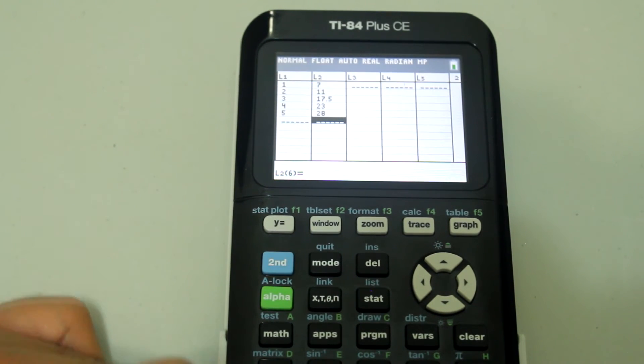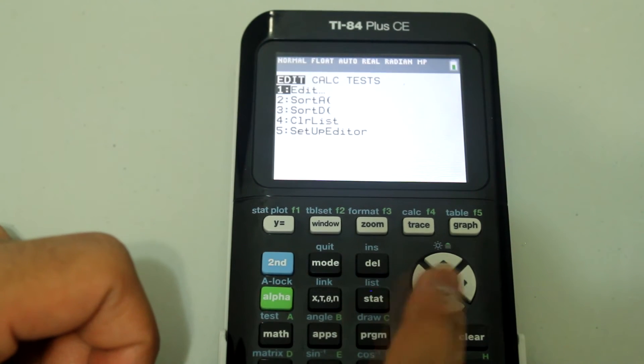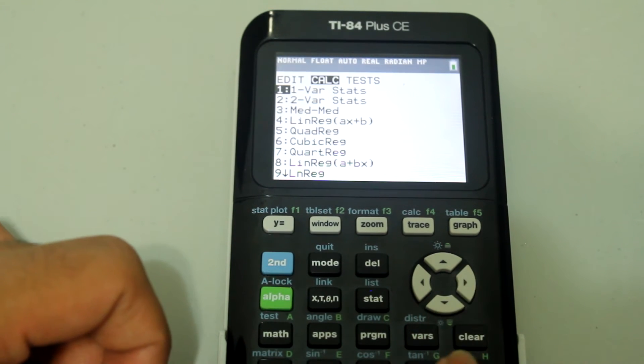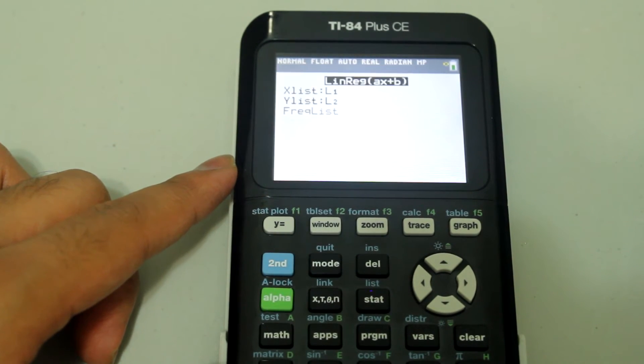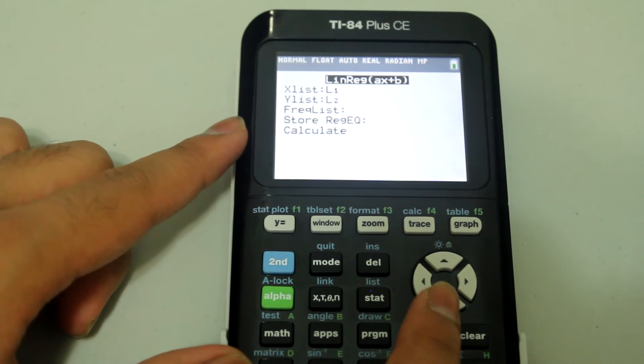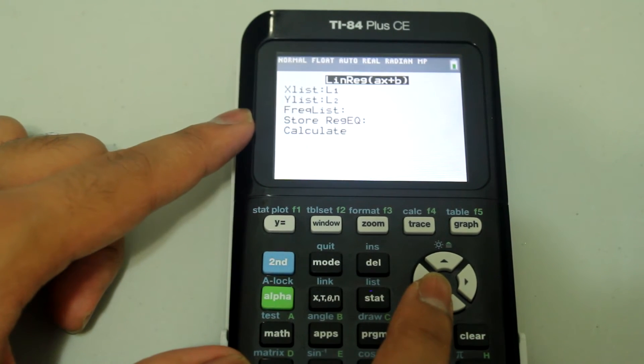to L2 and now we can go into STAT and use the right arrow to select CALC. For linear regression, choose number 4. And X list I want L1 and Y list I want L2 so just leave those.